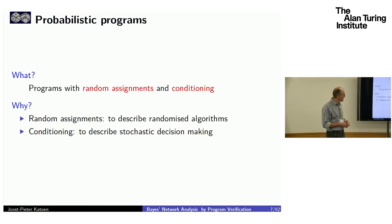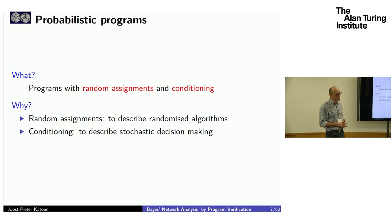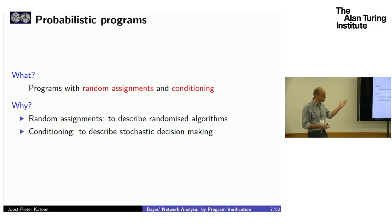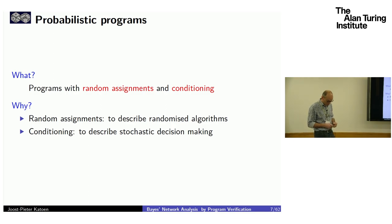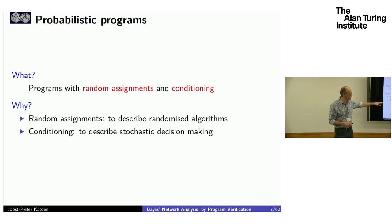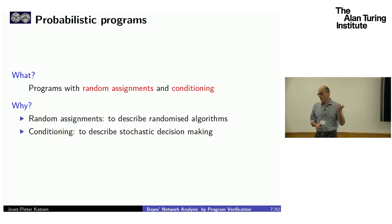You can describe these things very naturally in probabilistic programs. A probabilistic program in my setting will be an imperative program. Yesterday we saw logical programs. These programs have two main special ingredients in addition to the usual ones: random assignments and conditioning. We use conditioning for reasoning about evidences in Bayes networks.